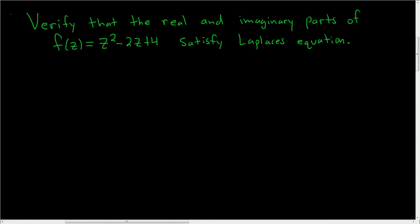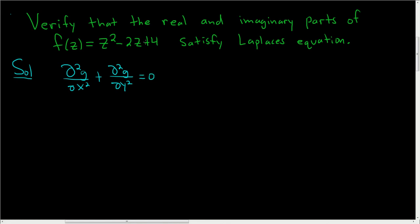Verify that the real and imaginary parts of f of z satisfy Laplace's equation. Recall Laplace's equation says that if you take the second partial derivative of g with respect to x and add that to the second partial derivative of g with respect to y, you end up with zero. In this problem we have to first find the real and imaginary parts of this function and then show they both satisfy this equation.